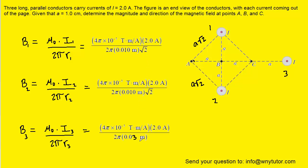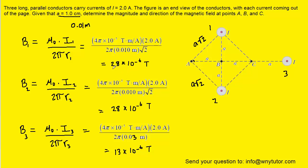Here is all the information carefully plugged in. Note that the distance for wire 3 is 3 times the value of A. Also notice that we had to convert 1 centimeter into meters by moving the decimal two places to the left to get 0.01 meters — that is the value for A in the formula. Processing these three calculations, for wires 1 and 2 you should get a magnitude of approximately 28 × 10⁻⁶ Tesla, and wire 3 produces a magnetic field of 13 × 10⁻⁶ Tesla.